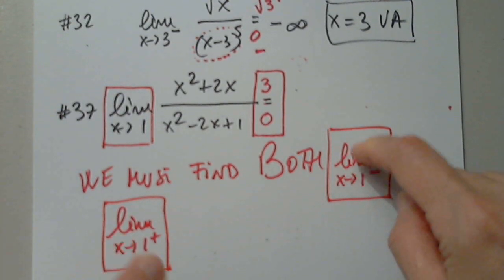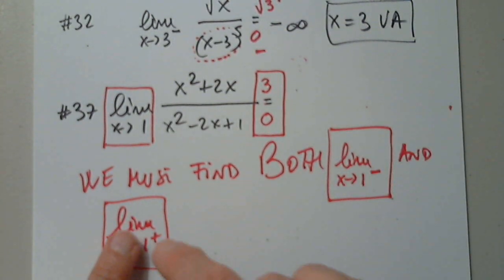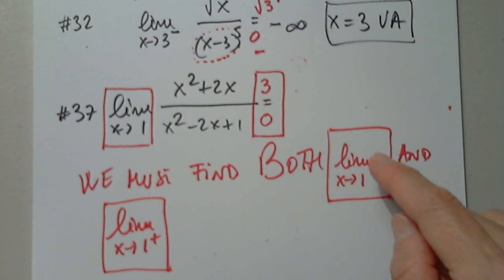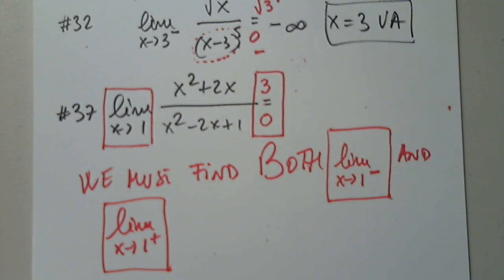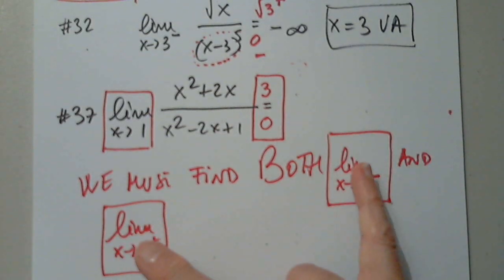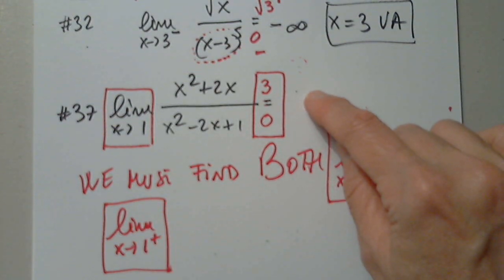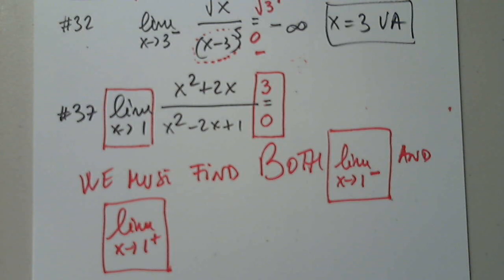If both limits are positive infinity, I write positive infinity. If both are negative infinity, I write negative infinity. But what if one is positive infinity and one is negative infinity? Then I write DNE. So I don't know what to write at this point — I have to determine both one-sided limits.